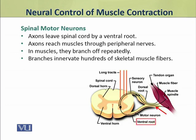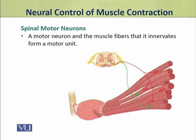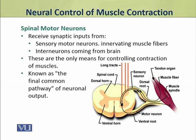In muscles, these axons branch off repeatedly. A motor neuron and all the muscle fibers it innervates together form a motor unit.